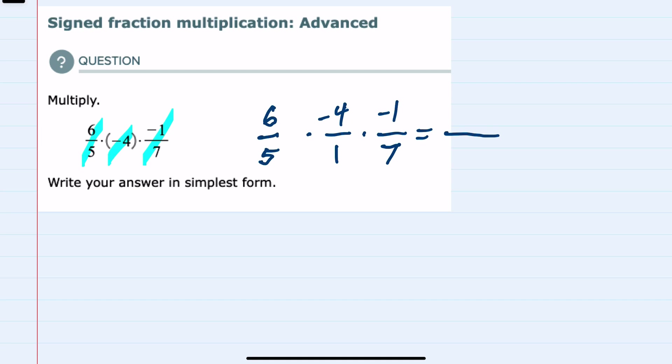in the denominator I can multiply straight across 5 times 1 times 7 to get 35, and then in the numerator I can multiply 6 times negative 4 to get a negative 24, and then multiply that with the negative 1 to get a positive 24.